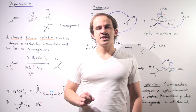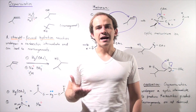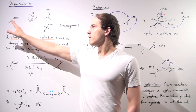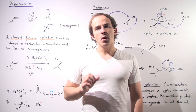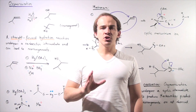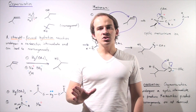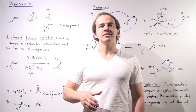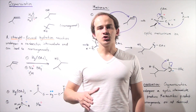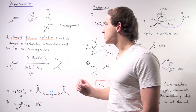Up to this point, we have discussed two important methods that allow us to produce alcohol compounds from alkenes. We spoke about hydroboration, which allows us to produce the anti-Markovnikov product, and we also spoke about direct hydration reactions that allow us to produce Markovnikov alcohol products.